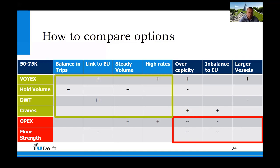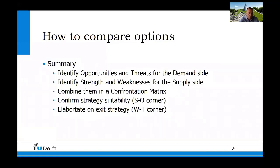This is the core of what you do. In the next step, you will further dive into this by going into the financial depth. But this is a first qualitative assessment of where you could be and what you could be doing. To summarize how to compare your options: identify the opportunities and threats on the demand side, identify strengths and weaknesses for the supply side ship options, combine them in a confrontation matrix, confirm strategy suitability by looking at the strength-opportunity corner, and elaborate on an exit strategy considering your weakness-and-threat corner. Thank you for your attention.